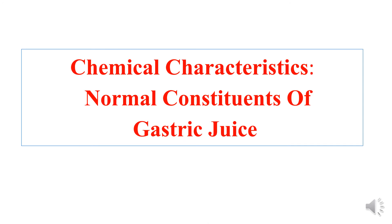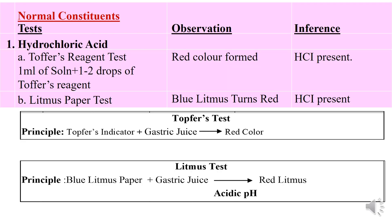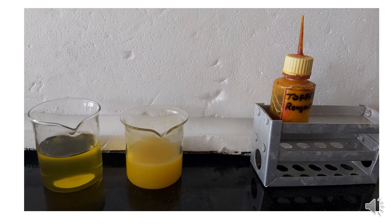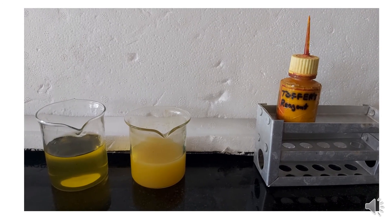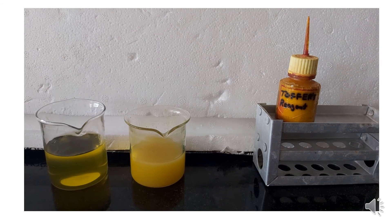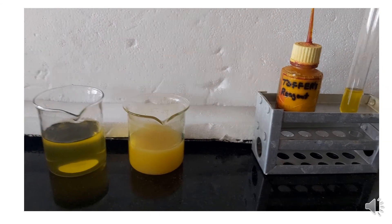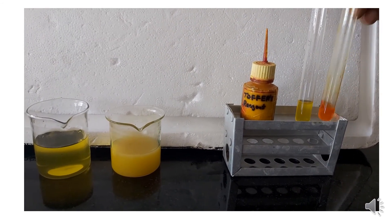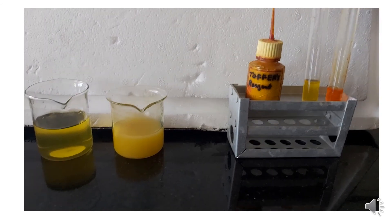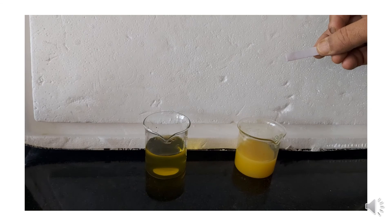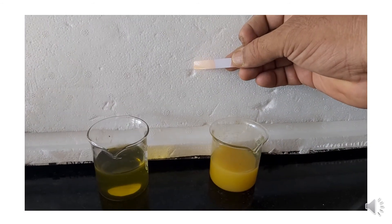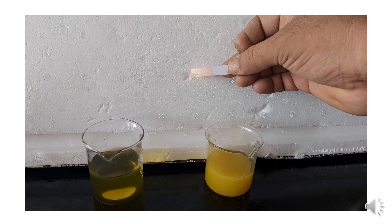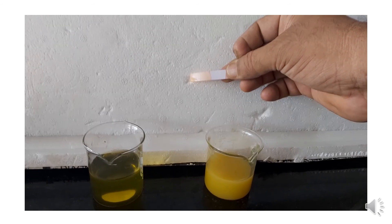The chemical characteristics include normal and abnormal constituents. First, the Topfer's reagent test: Topfer's reagent is used to indicate a very low pH of 1.5 to 3.5. In the presence of HCl the color changes to reddish. After adding one drop of Topfer's reagent to the gastric juice sample, it has become reddish in color. In the litmus paper test, dipping blue litmus paper into the gastric juice causes the dipped part to turn red, confirming it is acidic in nature.